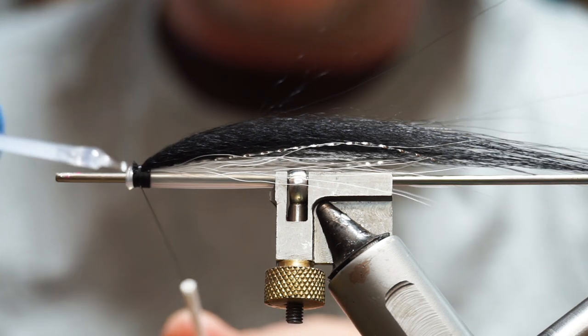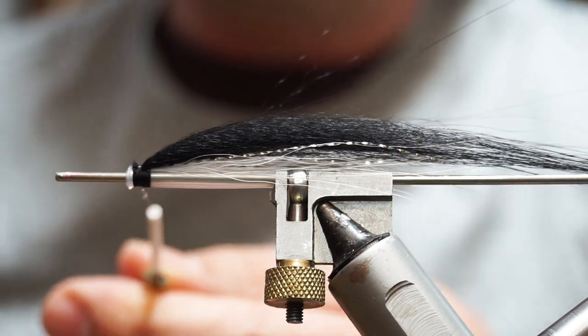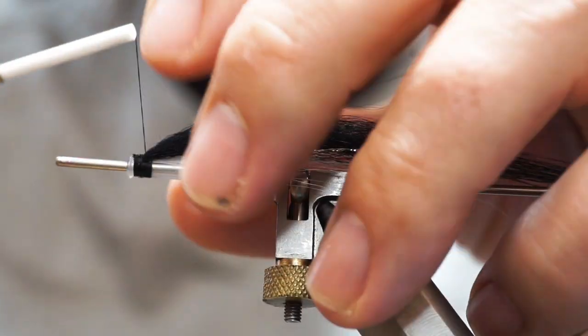And then what I'm going to do is I'm just going to take a little bit of clear varnish. I'm going to varnish about an inch or so of my thread and wrap over that.